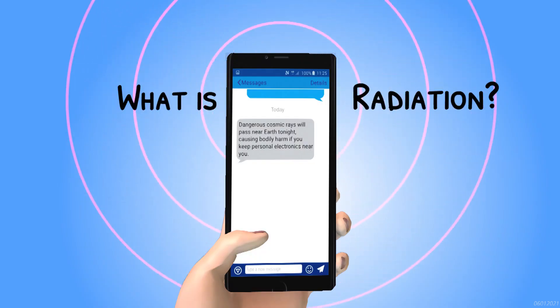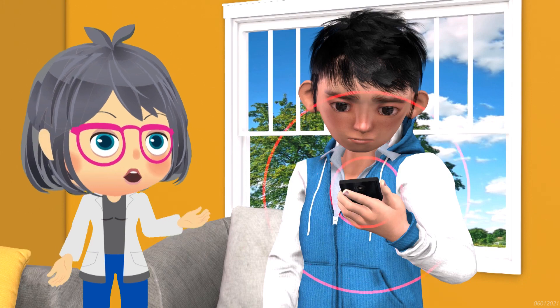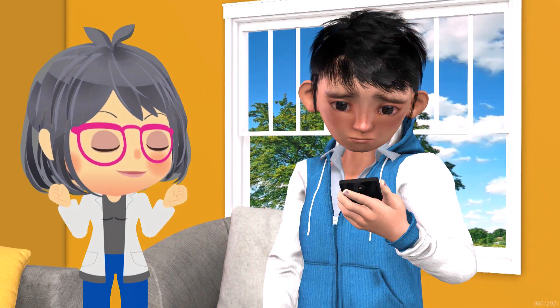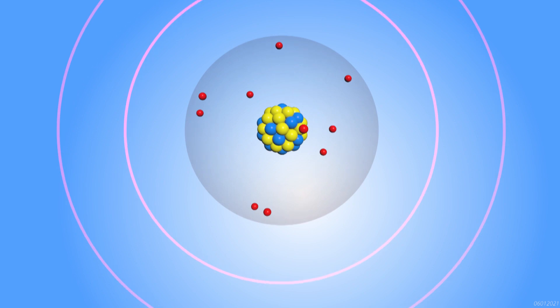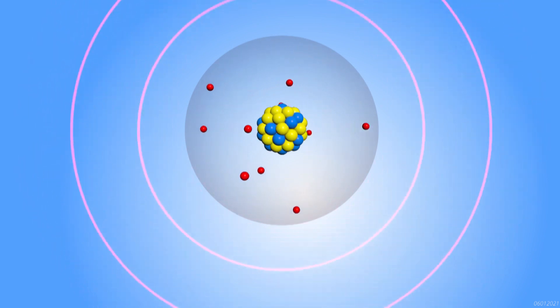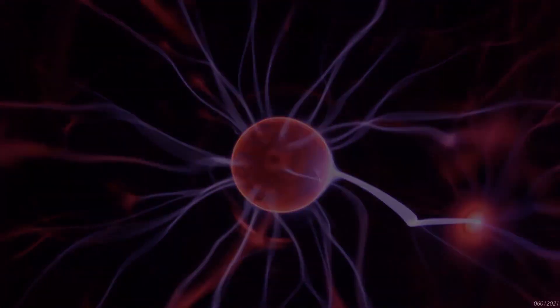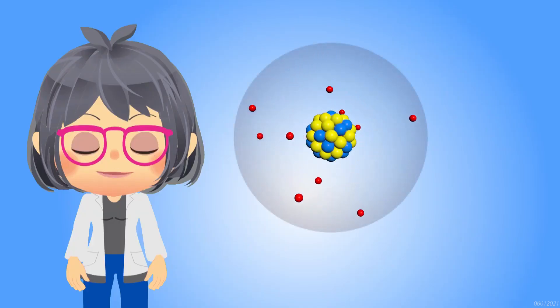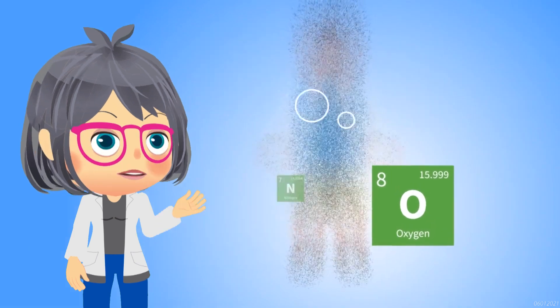What is radiation? Before we discuss what radiation is, we have to go back to where it all begins — the atom. This is the most basic unit of matter. Every solid, liquid, gas, and plasma is composed of atoms. So it makes up everything you see.